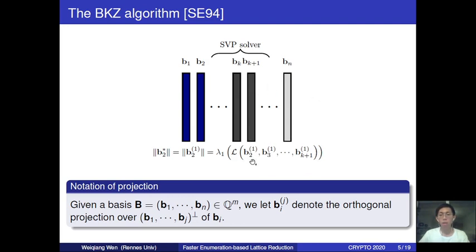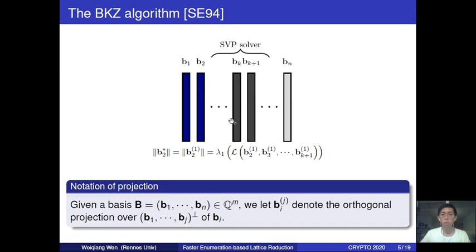By the second block I mean the second block after removing the projection over the first basis vector. The BKZ algorithm runs SVP from the first block to the last block, repeating this process sufficiently many times until for each block the first vector reaches the first minimum of the corresponding block. To evaluate the cost of BKZ, one can look at the cost of the underlying SVP solver, which is the most costly step inside BKZ.